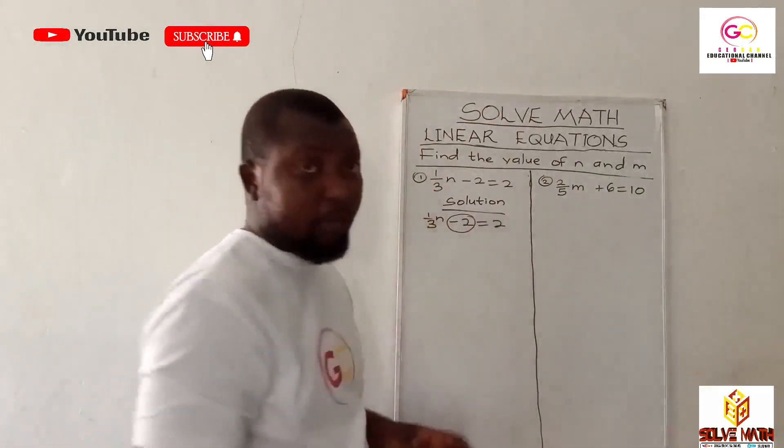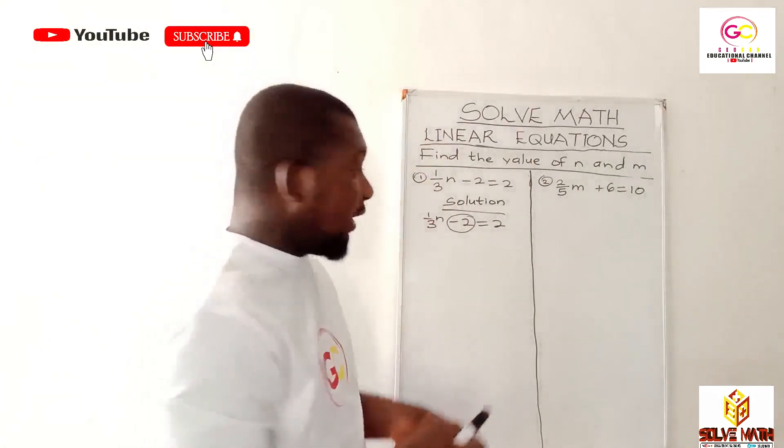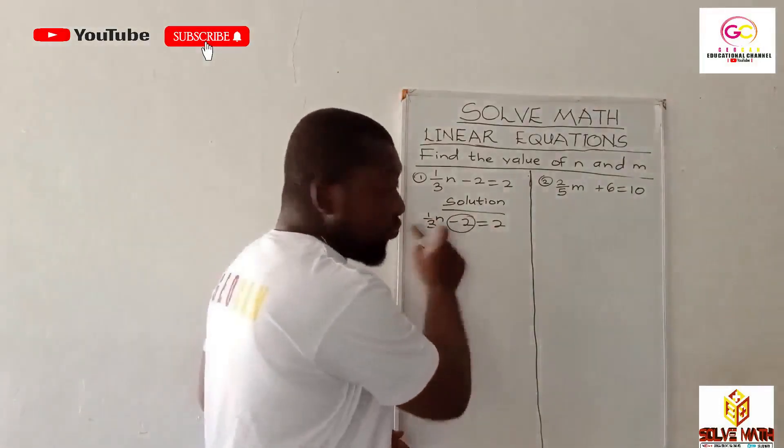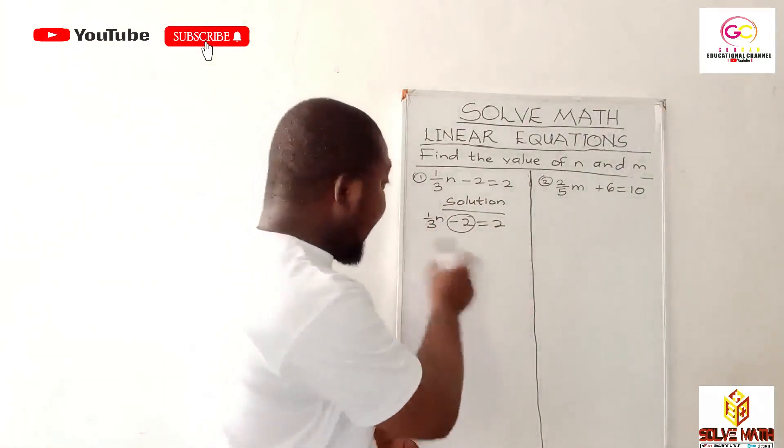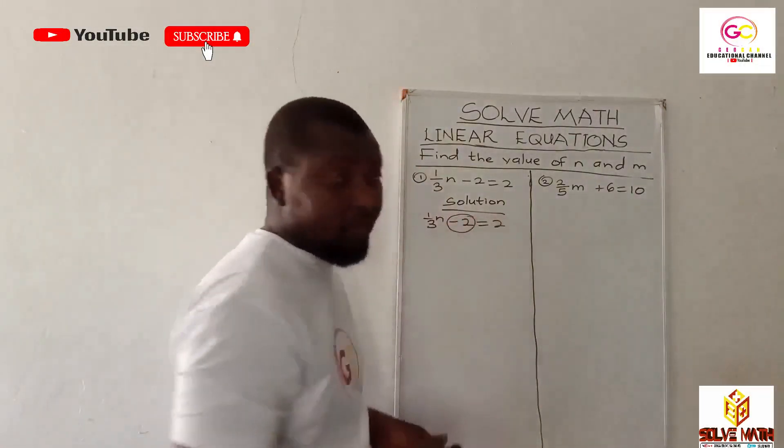Because it's negative, in order to isolate the term... if it were to be a positive two, then we would subtract from both sides, but this time it's negative two, so just add two to both sides of the equation.